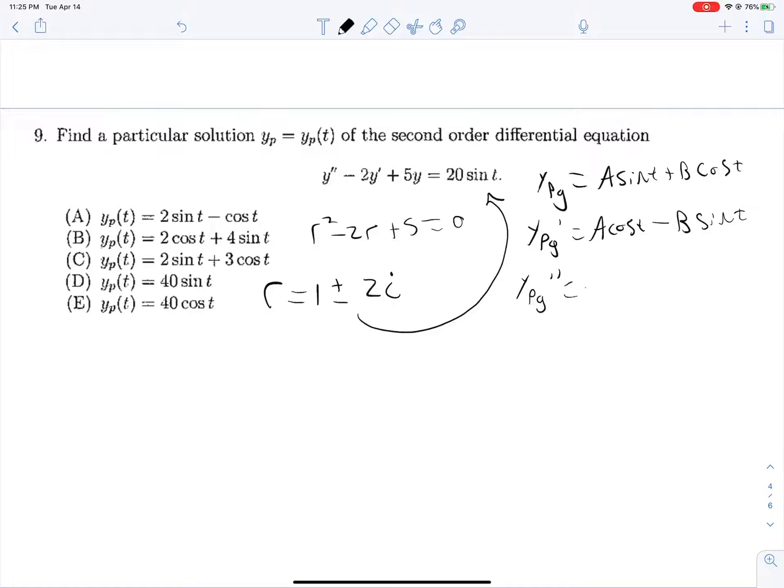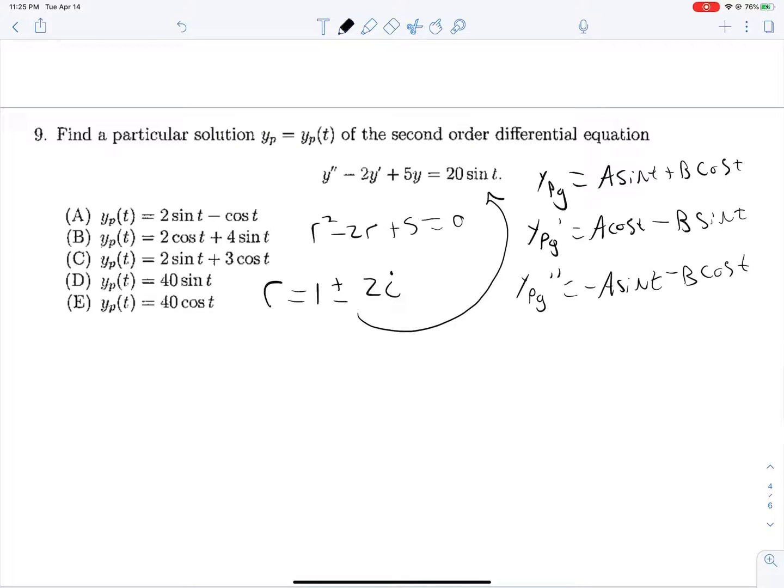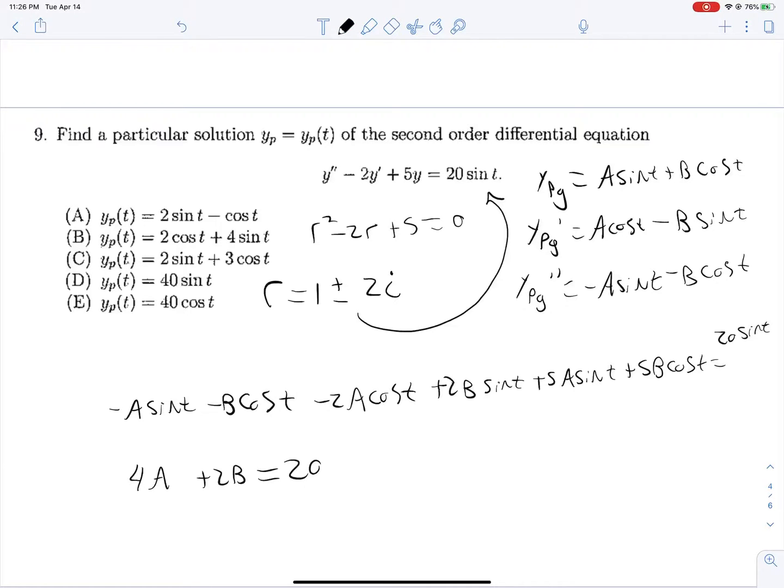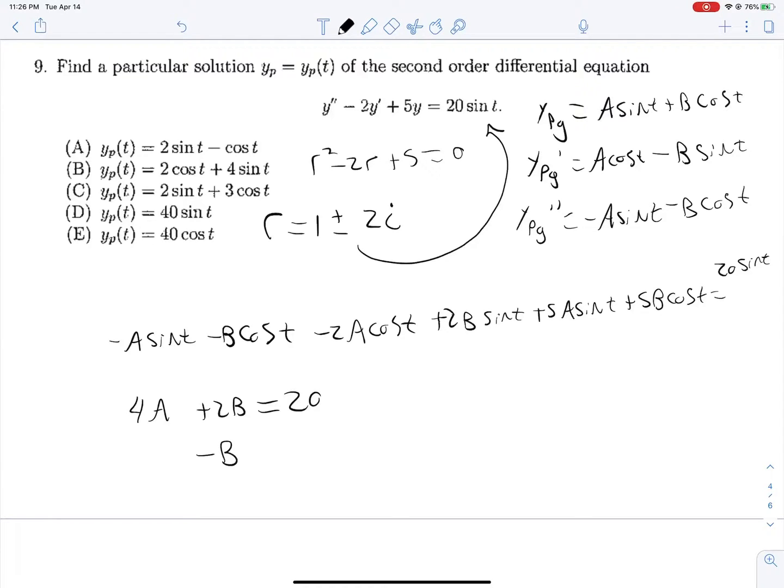So let's find ypg prime. That gives us A cosine t minus B sine t. And ypg double prime is negative A sine t minus B cosine t. Plugging these in, we will get negative A sine t minus B cosine t minus 2A cosine t plus 2B sine t plus 5A sine t plus 5B cosine t is equal to 20 sine t. So gathering all of our sine t terms, negative A plus 2B plus 5A, so that's 4A here, is equal to 20. And gathering our cosine t, negative B minus 2A plus 5B, so plus 4B there, is equal to 0.